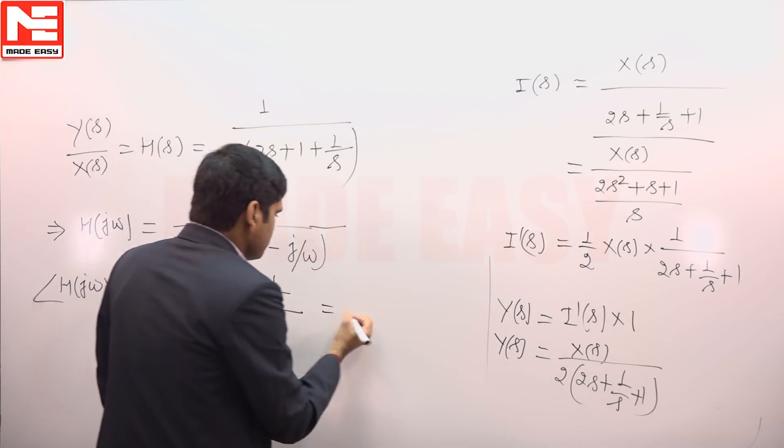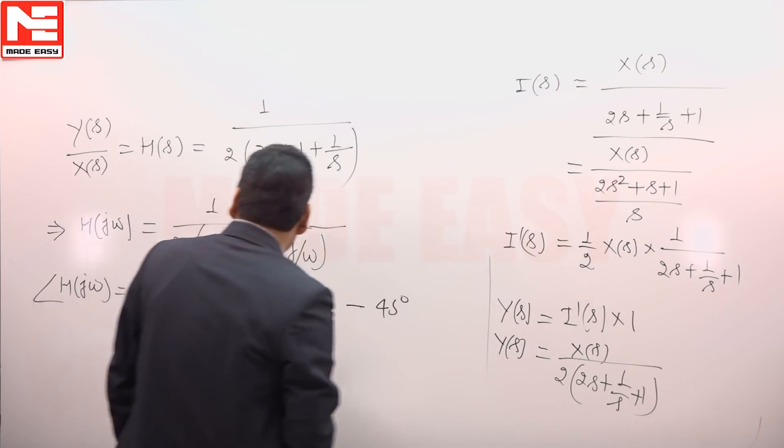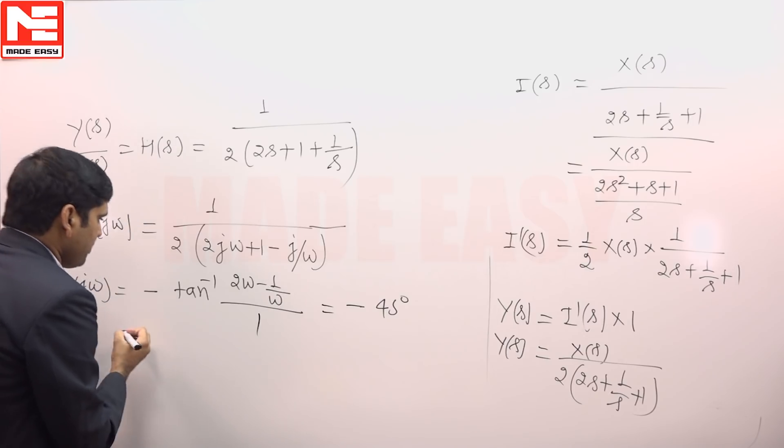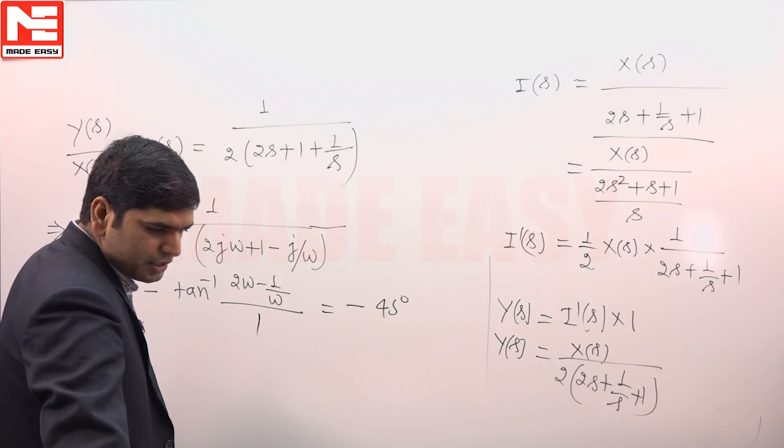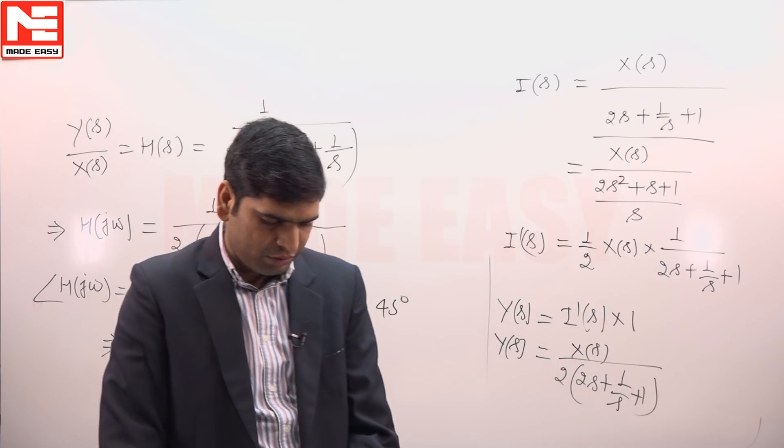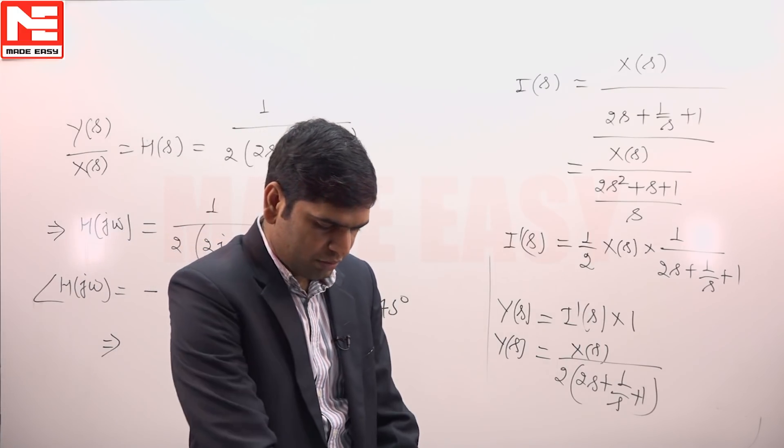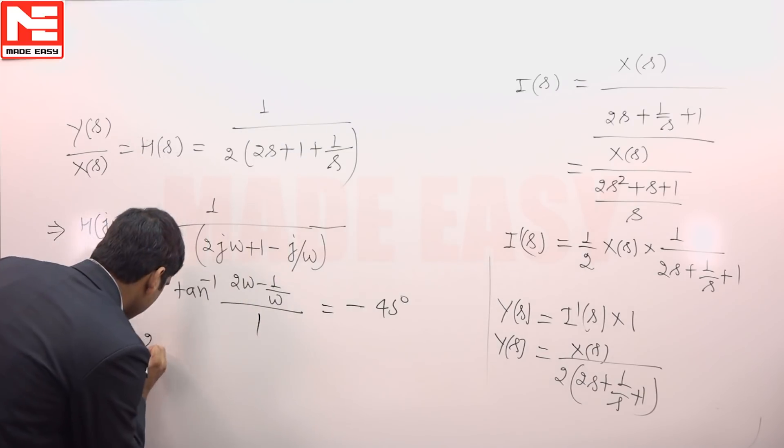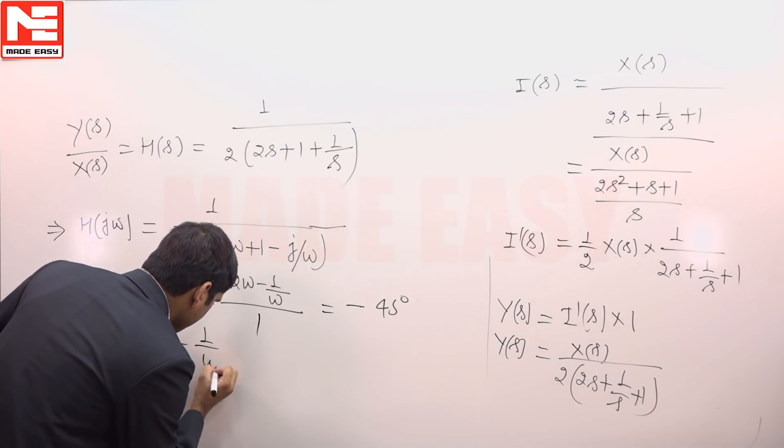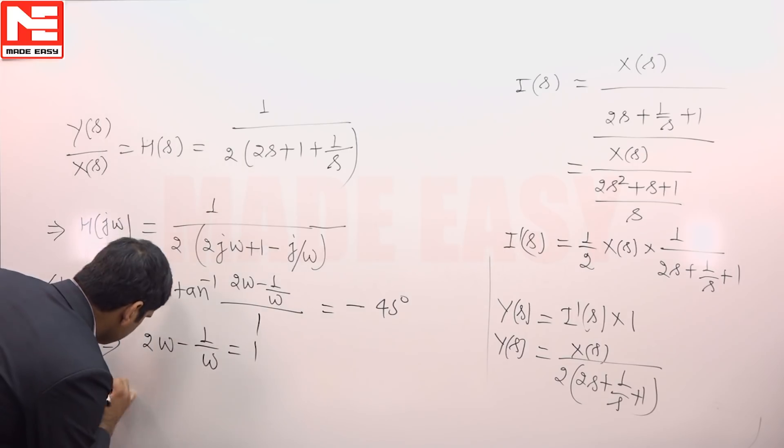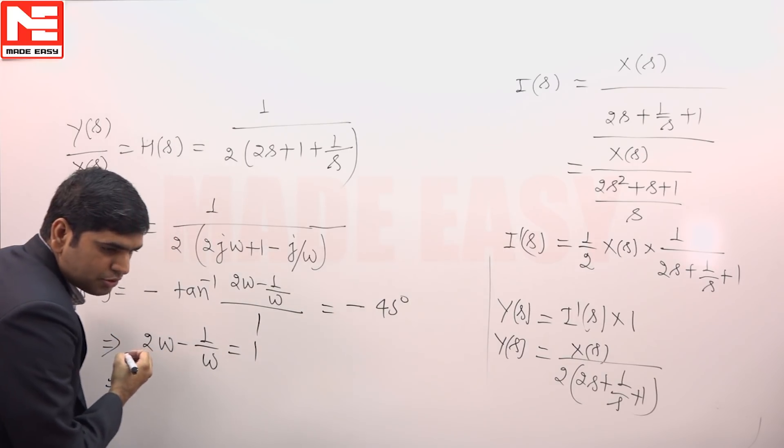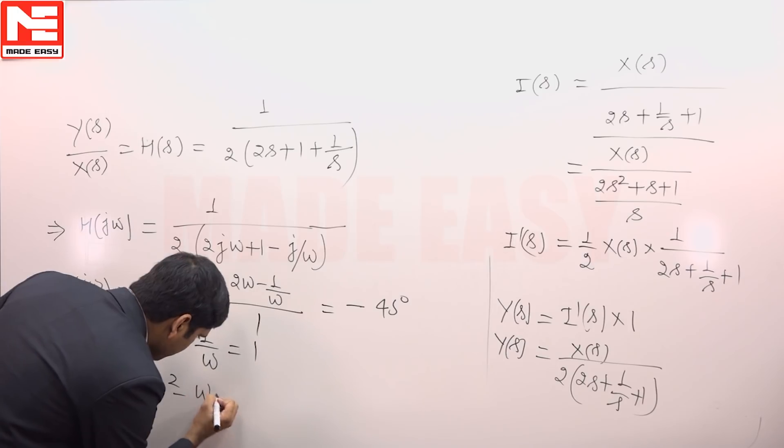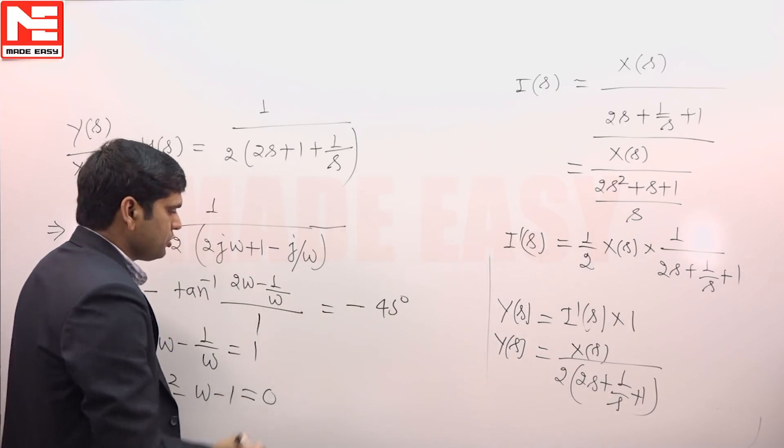This should be equal to minus 45 degrees. On simplifying this will become an equation: 2ω - 1/ω = 1. A quadratic equation which comes out as 2ω² - ω - 1 = 0.